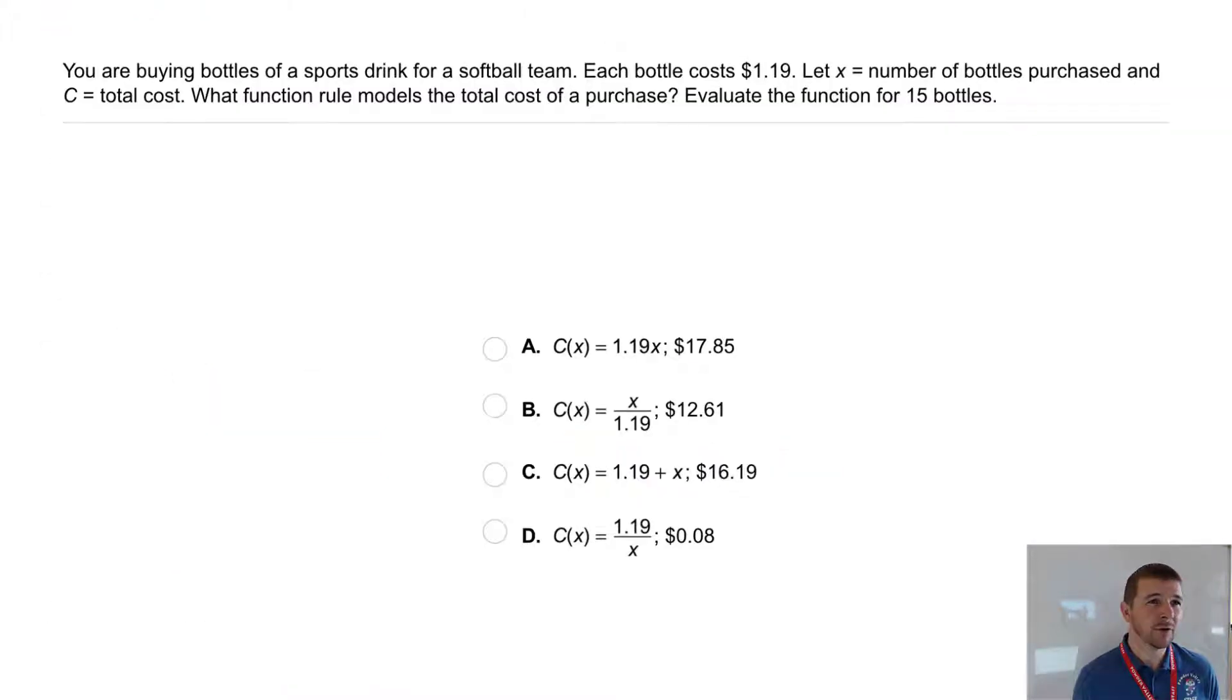Your turn. You are buying bottles of a sports drink for a softball team. Each bottle costs $1.19. Let x equal the number of bottles purchased and C the total cost. What function rule models the total cost of a purchase? Evaluate the function for 15 bottles.